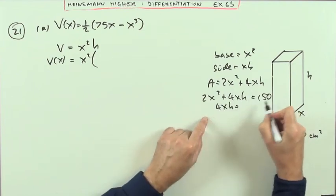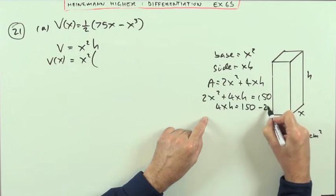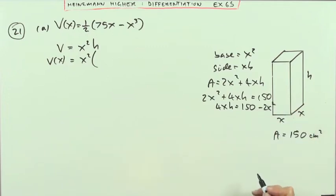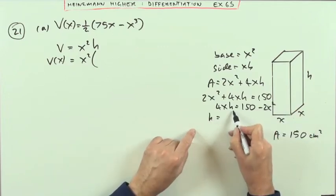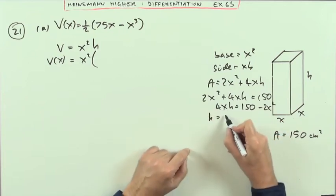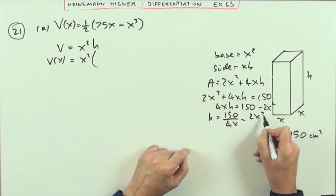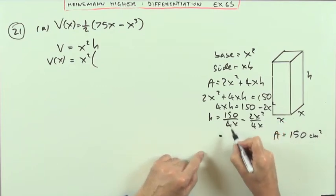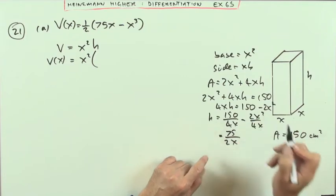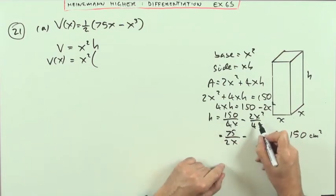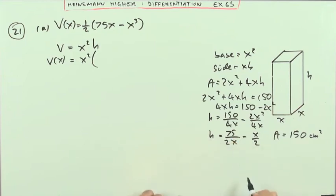So I've got 4xh would be 150 minus 2x squared. So finally h would be, take the 4x across and divide, so 150 over the 4x minus 2x squared over the 4x. That's 75 over 2x, just dividing by 2, and that's just going to be x upon 2, cancelling the 2 and the x's. There's an expression I can now substitute into that.